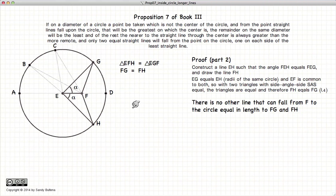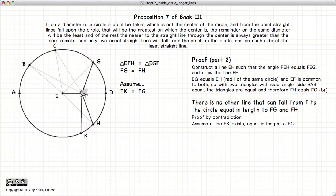Now we have to demonstrate that there is no other line that can also be equal to FG. So let's assume that we have a line FK, which is equal to FG. Now since FH is equal to FG, which is equal to FK, we have that FK is also equal to FH.